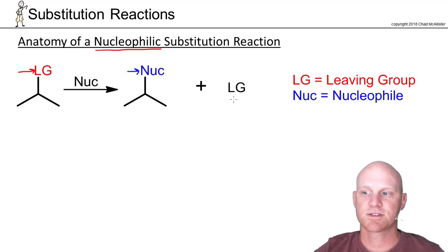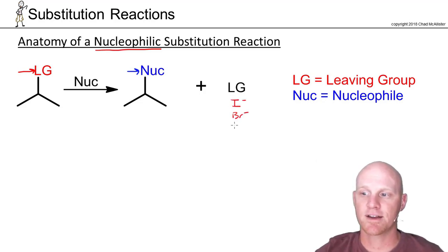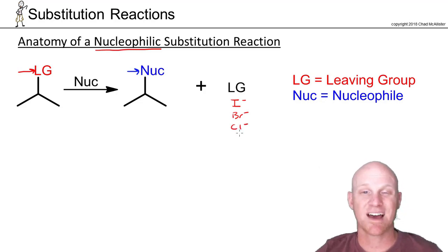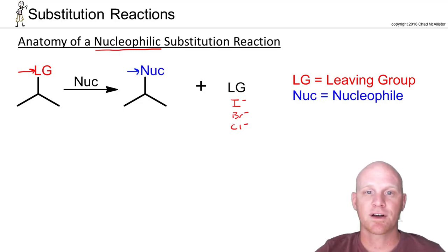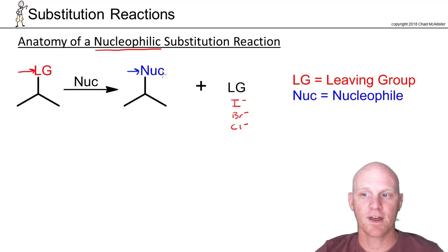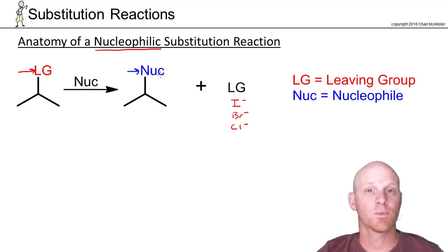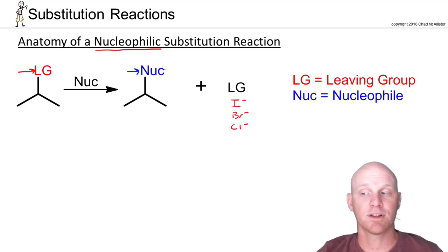The most common leaving groups are the halides: I minus, Br minus, Cl minus, and F minus. They're typically better the bigger they are, so F minus is the smallest and not great. Nucleophiles, on the other hand, come in a wide variety, and in this chapter they will all have a lone pair of electrons.